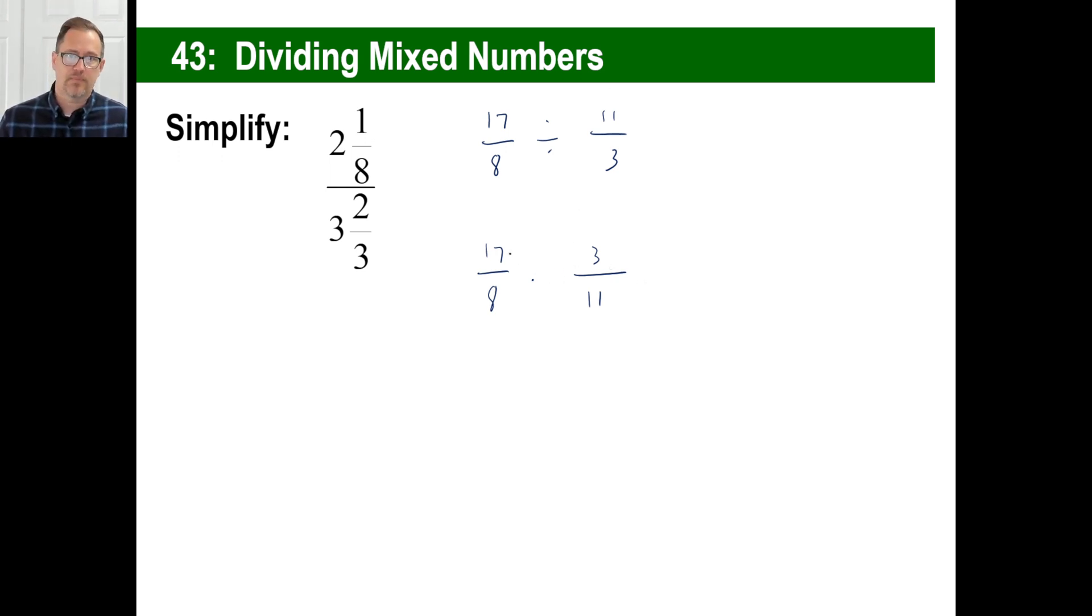So it's going to be times 3 over 11. Now, I don't see a thing here you can cancel out at all. 17 times 3, 10 times 3 is 30, 7 times 3 is 21. 30 plus 21, there we go. 8 times 11, we all know that one. And there you go. That's it. 51 over 88.